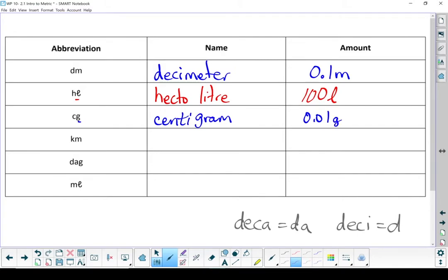KM. We've dealt with this one before. That's kilometer. That's our standard unit of measurement for long distances. And there are a thousand meters in a kilometer.